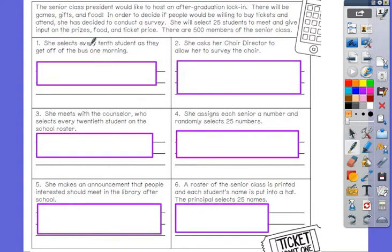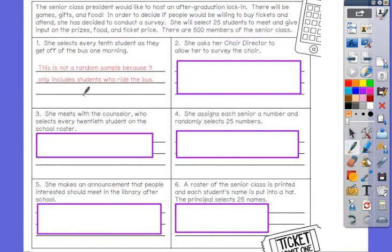Number one says she selects every tenth student as they get off the bus one morning. Would that be fair to ask every tenth person getting off the bus? It would be not random sampling because not everybody is riding the bus to school. You excluded those that are car riders or drive themselves or walk to school.